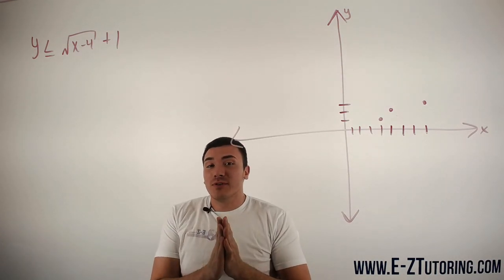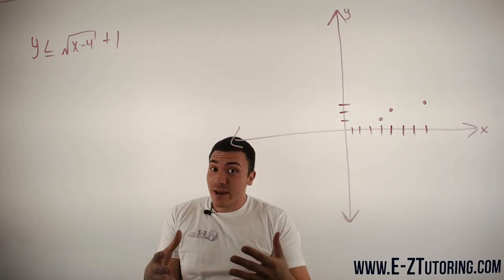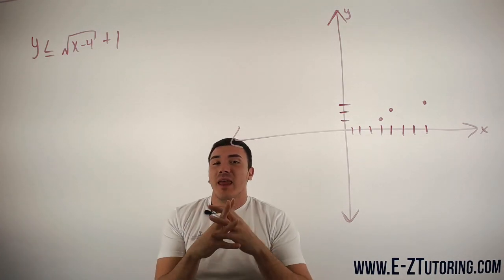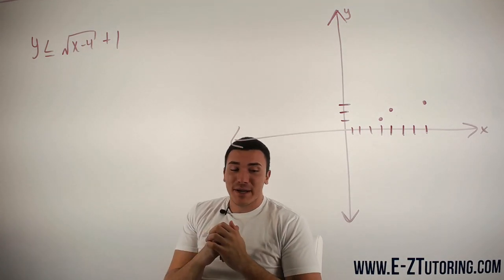Now I'm going to assume you guys already know how to graph regular square root equations where there is an equal sign here. If you guys are not familiar with that, be sure to check out my video on it.